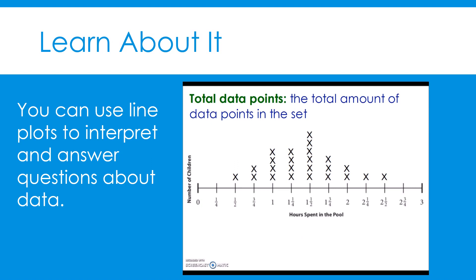Next, we will find the total data points — the total amount of data points in the set. In other words, how many children were surveyed? In order to do that, we simply need to count the X's since each X represents a child that was surveyed. We can count by ones or count how many X's are above each value and then add the total. Above one-half there is one X; above three-fourths there are two X's, and so on. When you add them all together, the total number of data points is 24. Twenty-four children were surveyed.